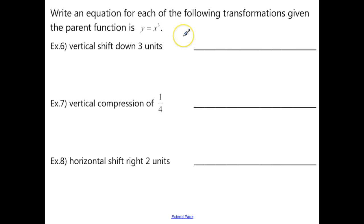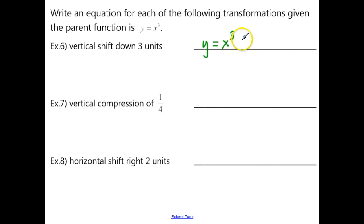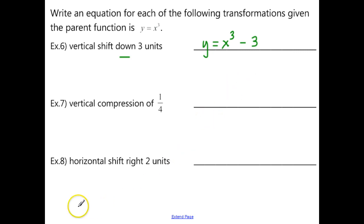Now we want to write an equation for each of the following transformations, given the parent function is y equals x cubed. These are the opposite of what we did on the previous page — instead of writing the description, given the description you need to write the equation of the transformed function. For example 6, a vertical shift down 3 units: a vertical shift is outside of the function, and down is in the negative direction, so we subtract 3. That gives us y equals x cubed minus 3.